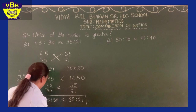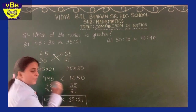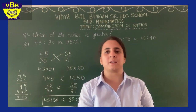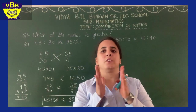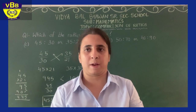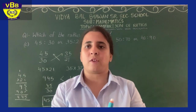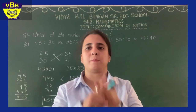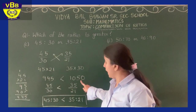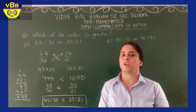You all know that in the inequality sign, the mouth is open towards the greater number. I hope that is clear. You just need to recall the concept of comparing fractions by cross multiplication and apply the same steps here, writing the final answer in ratio form.